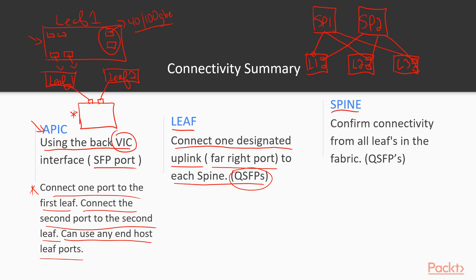Finally, for the spines, confirm that every single leaf in the fabric has an uplink connection to the spine. We need connectivity from all leaves to ensure a fully redundant fabric. Let's continue to the next video.